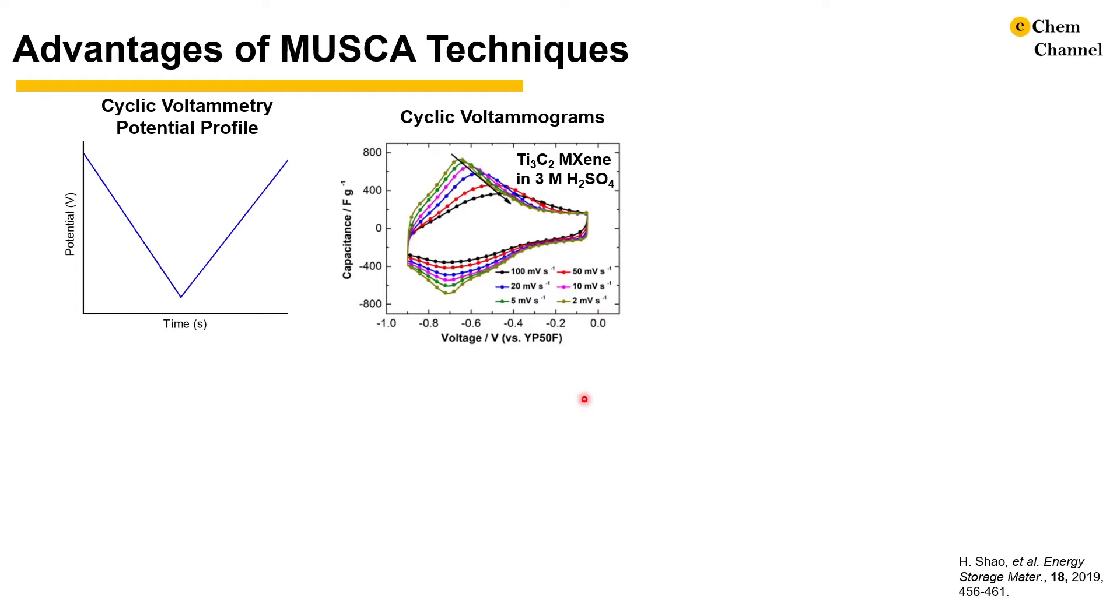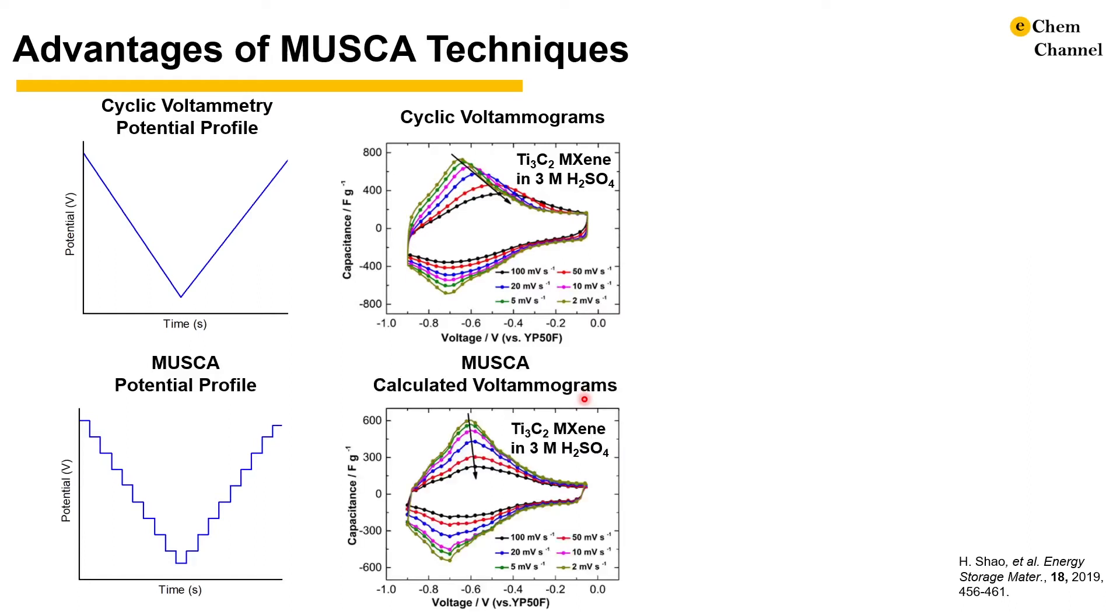The arrow here indicates the shift of anodic peak potentials at higher sweep rates due to kinetic limitations. In MUSCA, we apply a series of fewer but wider potential steps to cover the same potential window as cyclic voltammetry. Voltammograms of different sweep rates can be calculated from MUSCA data. Compared to the cyclic voltammograms, the MUSCA calculated voltammograms show reduced kinetic limitations.